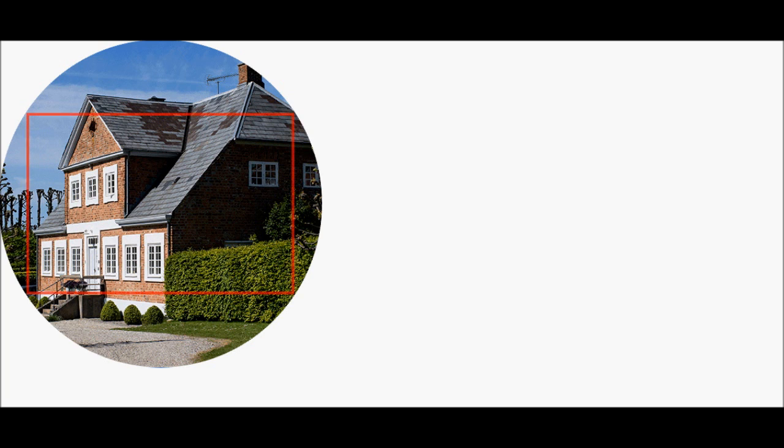Let's start by taking a look at this circular image, which represents everything that a normal 50mm camera lens might see when pointed at a subject. The red rectangle in the middle represents the camera's sensor. Anything inside of it will show up on your images, whereas the remainder will not. The rectangle in this illustration corresponds to the size of traditional 35mm film,